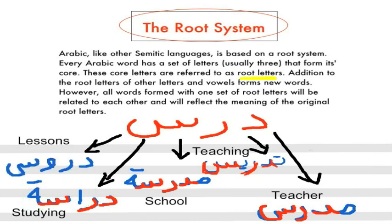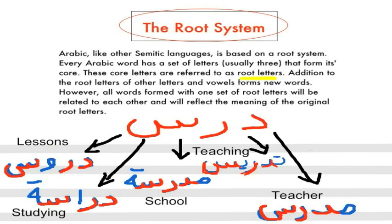The last example is the word durus. The root letters are dal, ra, sin, and they're not next to each other — they're separated by wow. Durus means lessons. Here you can see all the words made from the root letters dal, ra, sin: darasa.